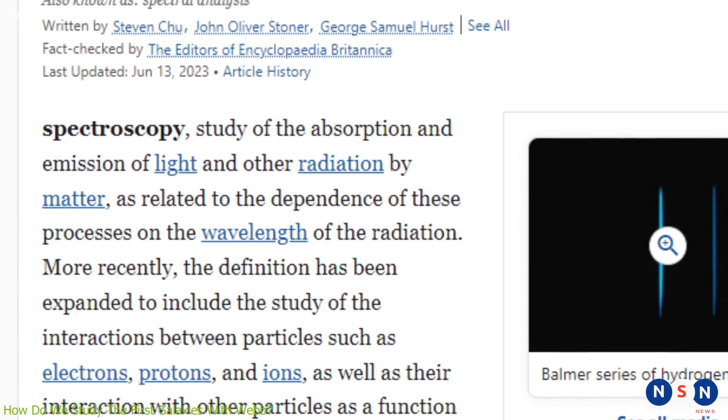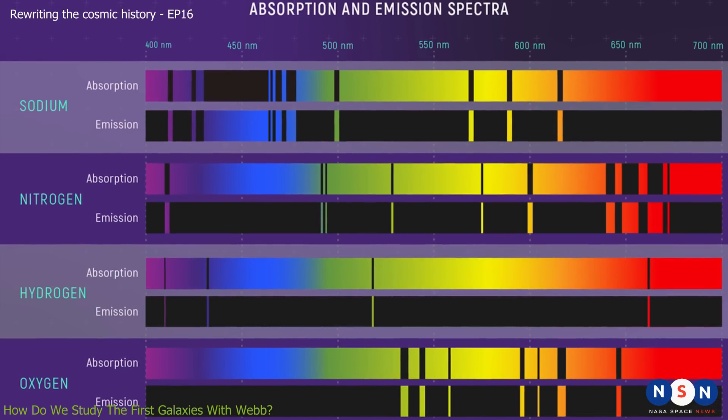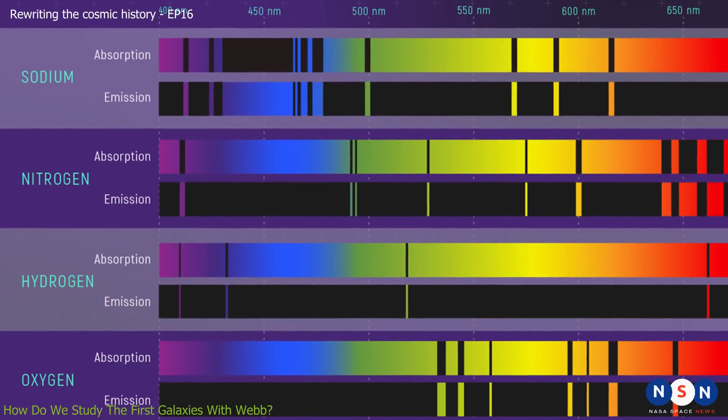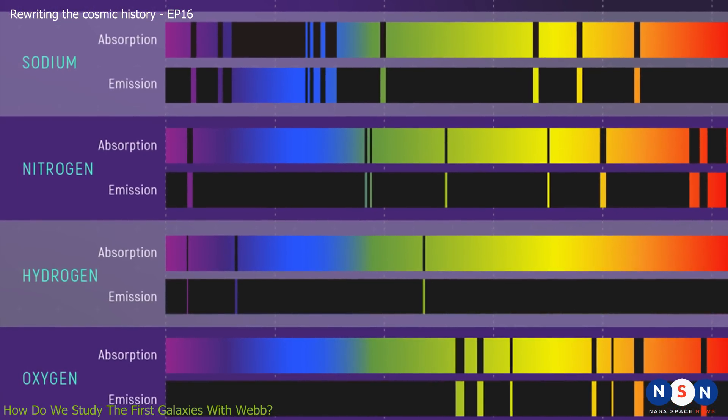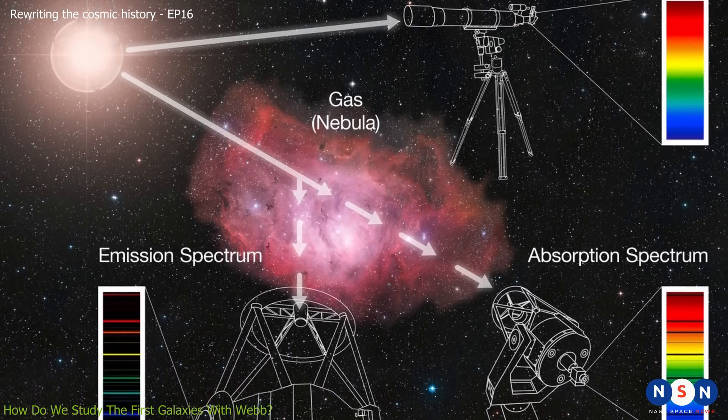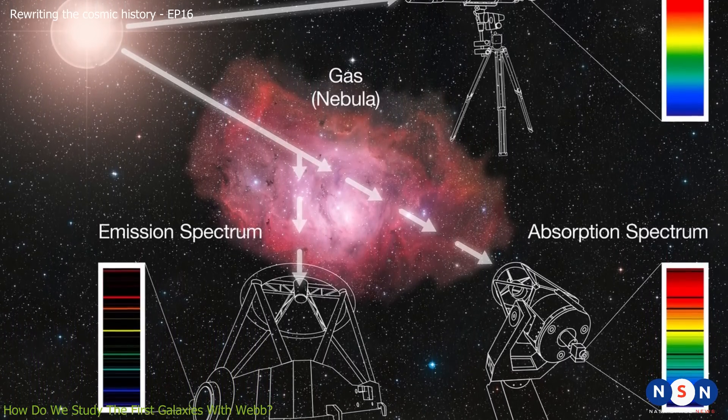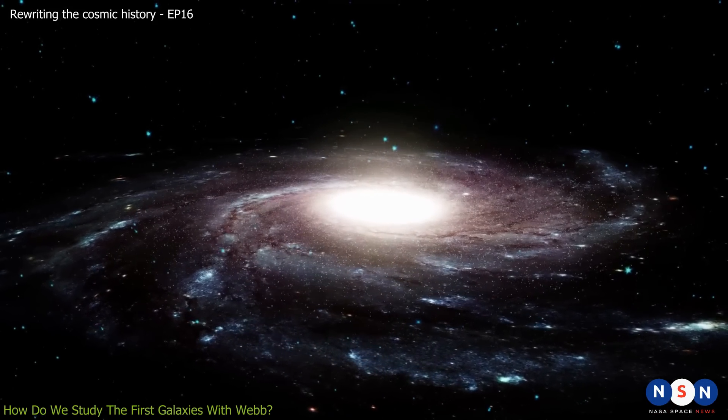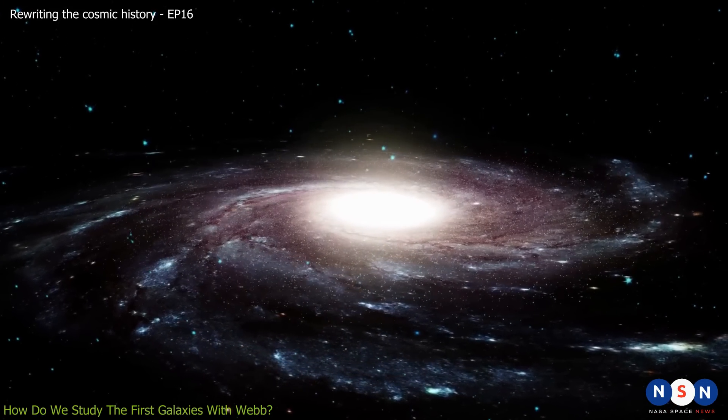Spectroscopy is the study of how light interacts with matter. Different elements and molecules absorb and emit light at specific wavelengths, creating characteristic patterns called spectra. By analyzing the spectra of a galaxy, we can identify what elements and molecules are present in it, and how much of them there are. We can also measure the temperature, pressure, density, and motion of the gas and stars in the galaxy.